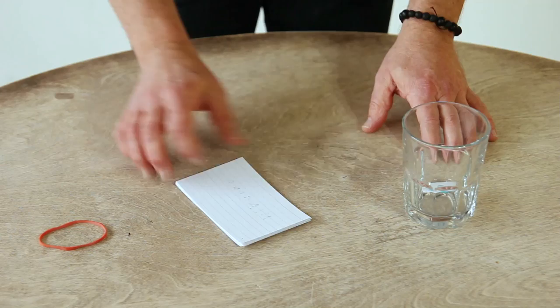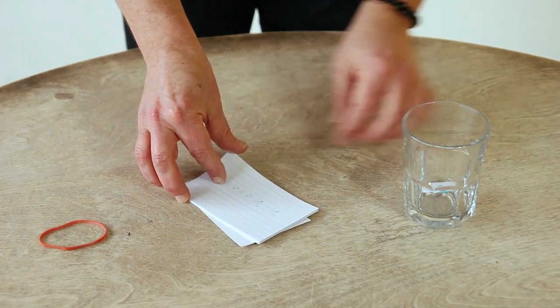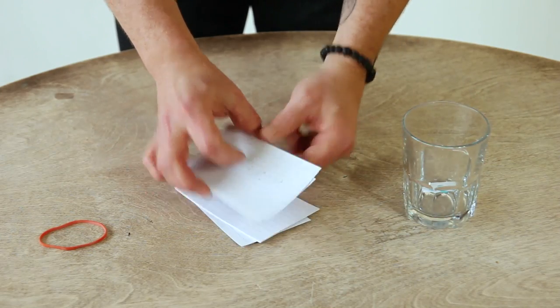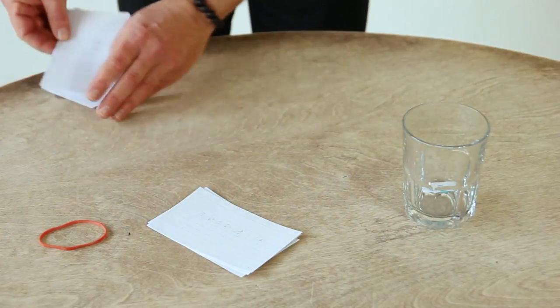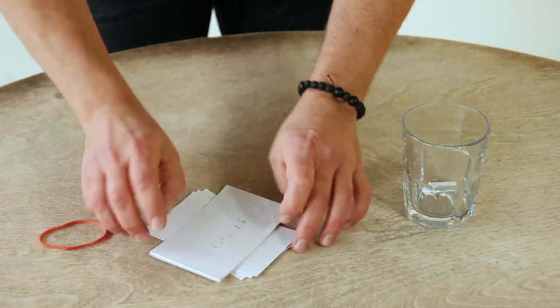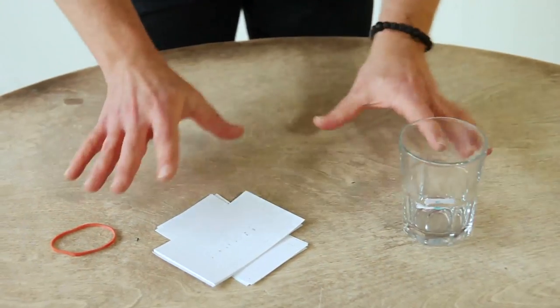So what you ask someone to do is to lift off some and the cool thing with this trick is they can cut anywhere they want. So let's say they lift off some cards right about in the middle there. Then you mark the cut like this, right where you cut we'll mark that just like that. Perfect.